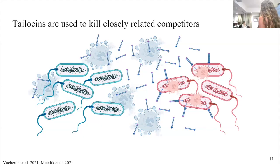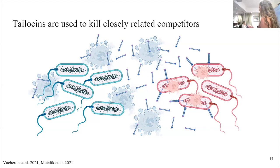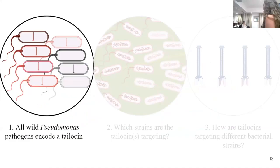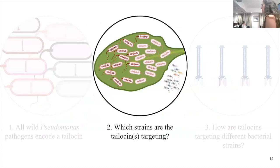Something I really want to emphasize with this group is that these are not self-replicating phages anymore. They are a protein complex in the bacterial genome, so the bacteria has to produce these. We started this project wondering if the wild Pseudomonas strains encode viral elements or prophages, and we found that all of our wild Pseudomonas isolates encode this thing called a talosin. So we wondered, because we know these are often used for competition, which strains the talosins are targeting.